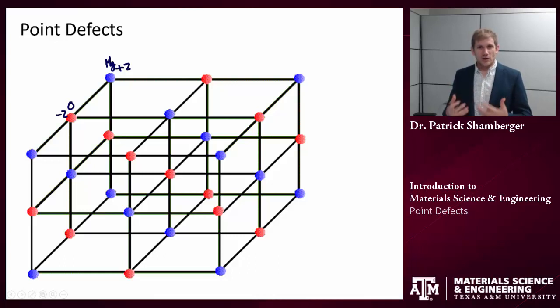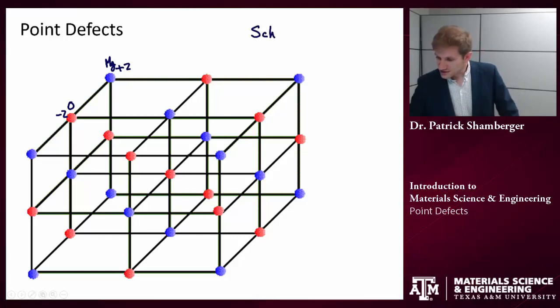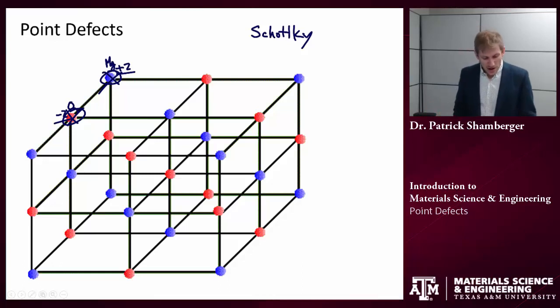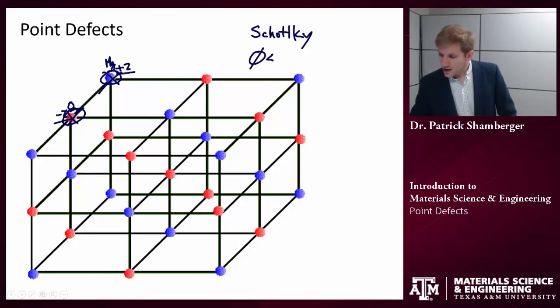So the rule is that when we're dealing with ionic compounds, we always need to maintain charge balance. Because of that, there are two special kinds of point defects that we see very frequently in ionic systems. The first are called Schottky defects. And this is when we have a paired vacancy. So let's say both this magnesium and this oxygen atom are missing. So we're missing a plus two charge and we're missing a minus two charge. So we have maintained charge balance.